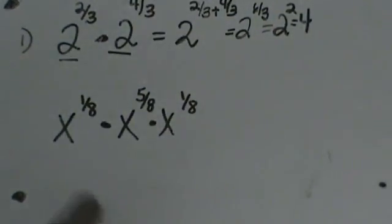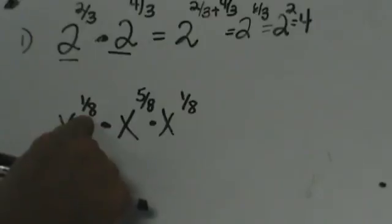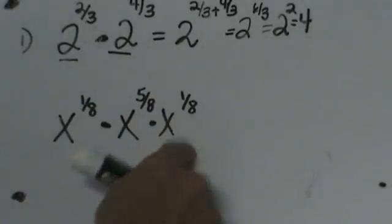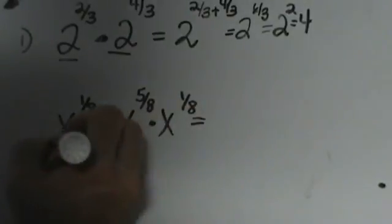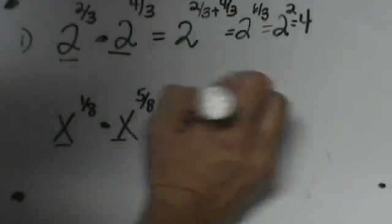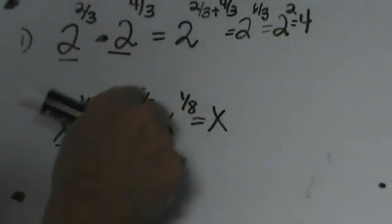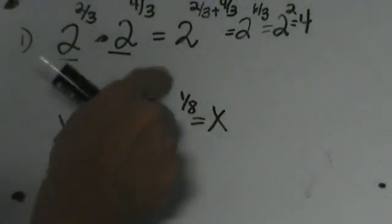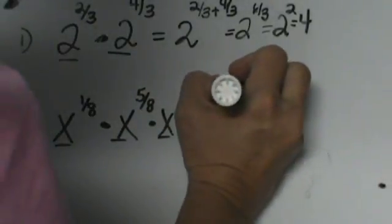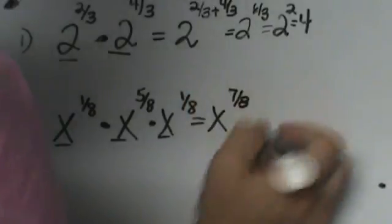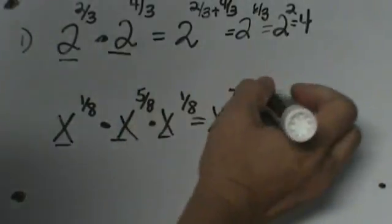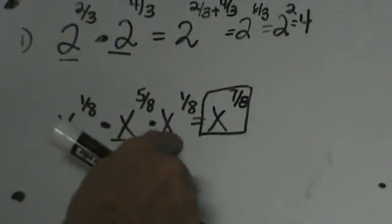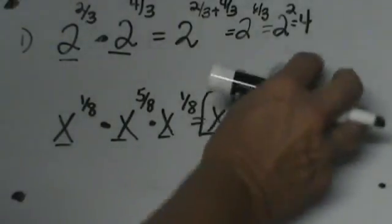So let's look at one with variables. We have x to the 1/8 times x to the 5/8 times x to the 1/8. Using the same rule, we are going to keep our base — so it is still going to be x. Then we are going to add the exponents: 1/8 plus 5/8 plus 1/8 adds to 7/8. This exponent won't simplify, so the answer is just x to the 7/8, and we have kept our base.